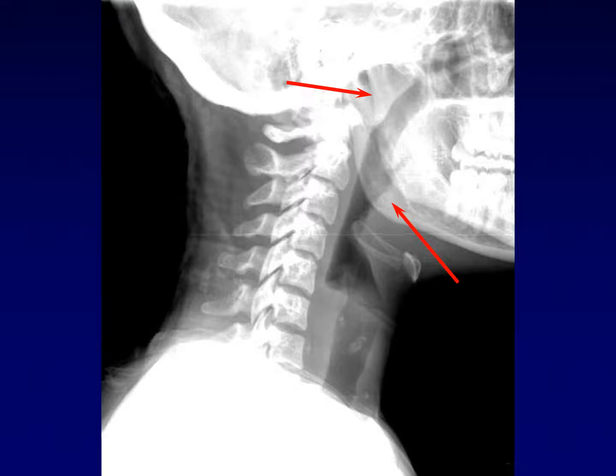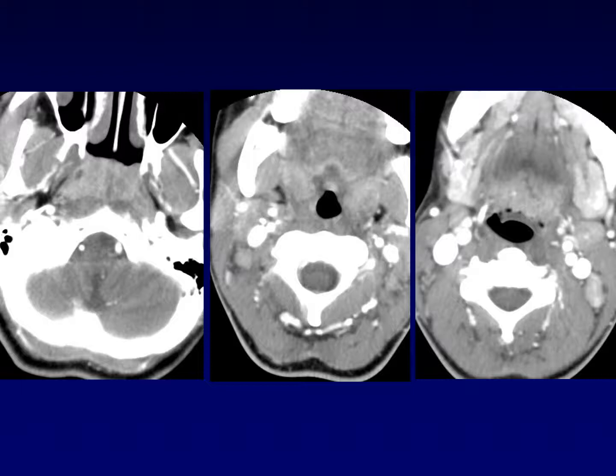We can see such enlargement on lateral plain films. Normally we should be able to see an epiglottis sticking up, but the vallecula that normally sits above the epiglottis and allows us to see it by contrasting with the air-filled vallecula instead has been filled with soft tissue. This is the lingual tonsil enlarged, completely filling the vallecula. Similarly, we can see the nasopharynx being filled with enlarged tissue from the adenoids.